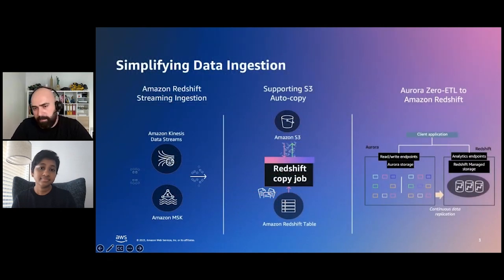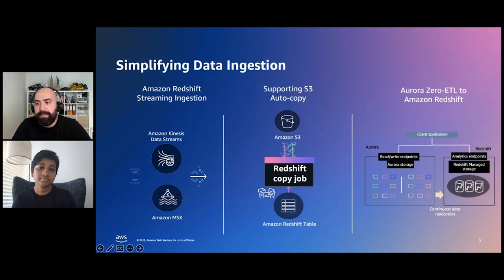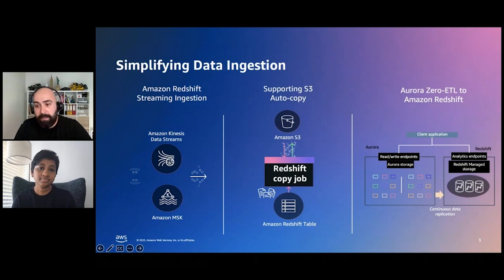Lately, we had a couple of announcements in this area to address some of these problems, like streaming ingestion support. If you're using streaming engines like Kinesis Data Streams or Managed Streams for Apache Kafka, previously you would create a staging environment on Amazon S3, store your streaming data first, and then ingest it into Redshift from S3. Now, with streaming ingestion, we are eliminating this step, and you can directly stream data into Redshift.